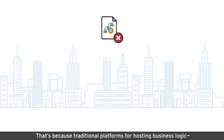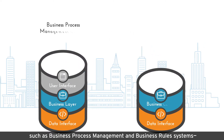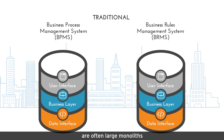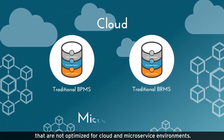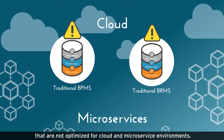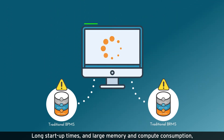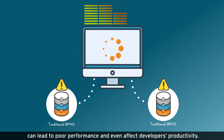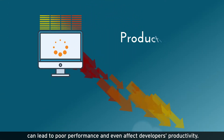That's because traditional platforms for hosting business logic, such as business process management and business rule systems, are often large monoliths that are not optimized for cloud and microservice environments. Long startup times and large memory and compute consumption can lead to poor performance and even affect developers' productivity.